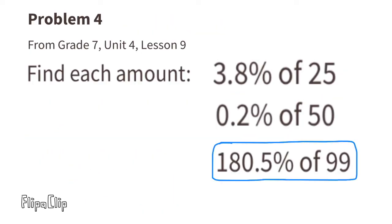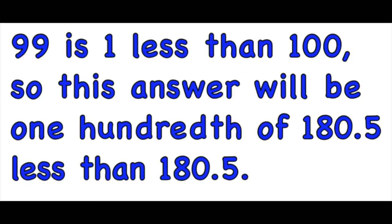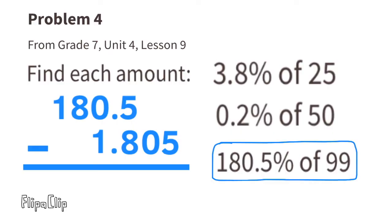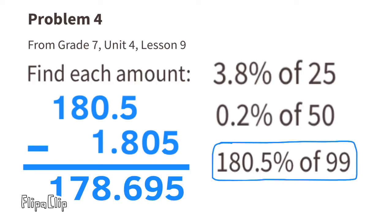180.5% of 99 — it's probably easiest to multiply 1.805 × 99, but another way: 99 is one less than 100, so the answer is one-hundredth of 180.5 less than 180.5. One-hundredth of 180.5 is 1.805, so 180.5 − 1.805 = 178.695 — the same result as multiplying 1.805 × 99.